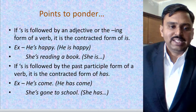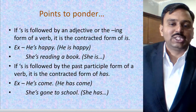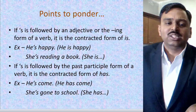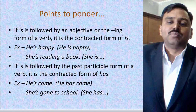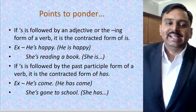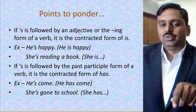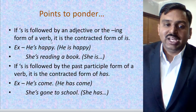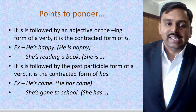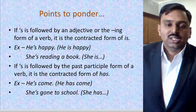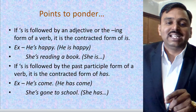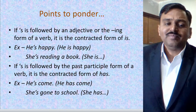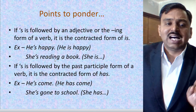The first rule: if apostrophe 's' is followed by an adjective or the '-ing' form of a verb, it is the contracted form of 'is.' For example, 'he's happy' — happy is an adjective after 's,' so it means 'he is happy.' Similarly, 'she's reading' — reading is the '-ing' verb form, so the contraction represents 'is.'